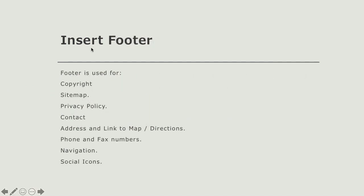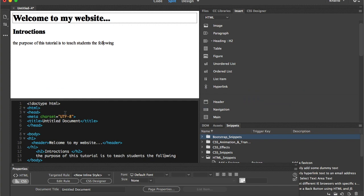Now we have another option: inserting a footer. The footer is used in several ways — for example, it can contain copyright information, a sitemap with all the pages of the website, a privacy policy, contact details like phone number or email, a navigation bar, or social icons for Facebook, Twitter, and Instagram. Inserting a footer won't be any different than any other element — I just specify where to put it.